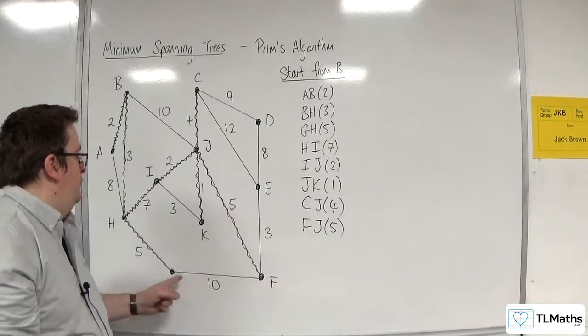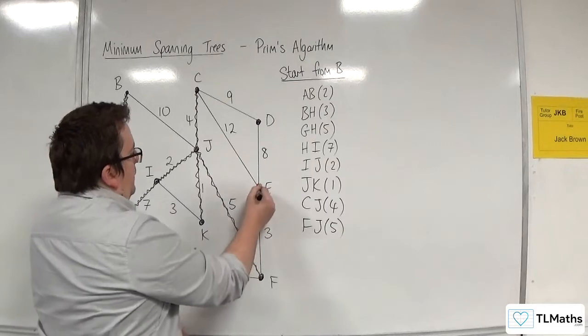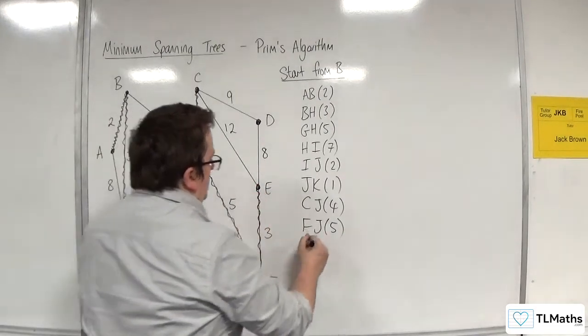We won't pick FG because that will create a cycle. So next one's going to be EF with 3.